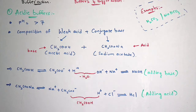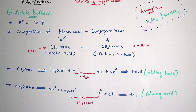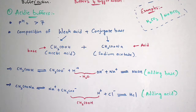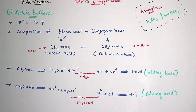We can also take other examples such as H2CO3 and NaCO3. H2CO3 is carbonic acid and NaCO3 is sodium bicarbonate. Now let us discuss about basic buffers.